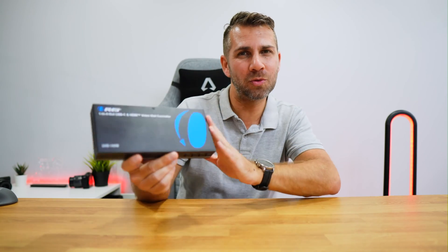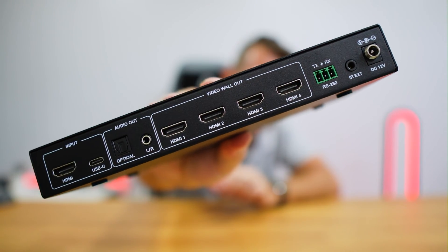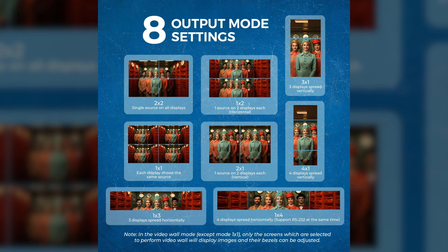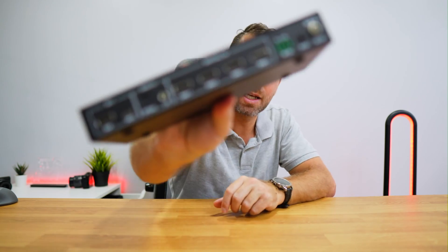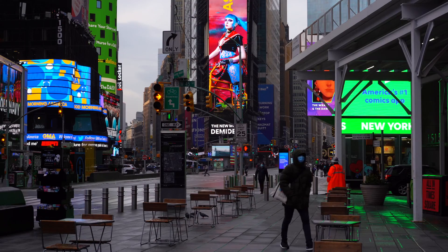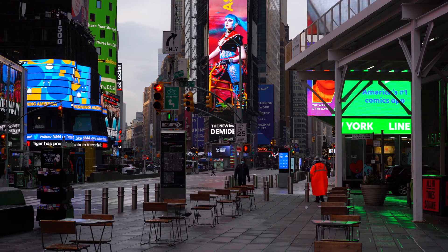Welcome back to another video. Today we are going to take a look at a video wall controller which, as we can see at the back, is simple to use. It will make our life simple if we want to have a big image composed by — in this particular case — up to four displays, which we can use in a two by two arrangement, horizontally up to four, or vertically up to four. If you haven't subscribed to the channel, please consider doing so. Now, when we look at those awesome video walls we think it's difficult to achieve, but with this video wall controller you will see that it's actually quite simple.